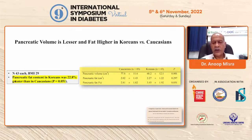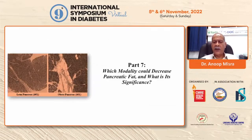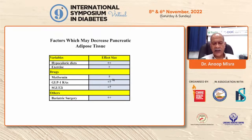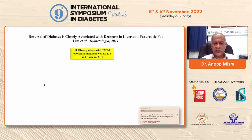Part seven — where clinicians should focus — asks which modalities can decrease pancreatic fat. These include: hypocaloric diet, exercise, metformin (with a query), GLP-1 receptor analogs (plus or query), and bariatric surgery (definitely). The evidence continues to evolve. The leading study that introduced the concept of diabetes reversal involved 11 obese patients with type 2 diabetes given a markedly hypocaloric diet.